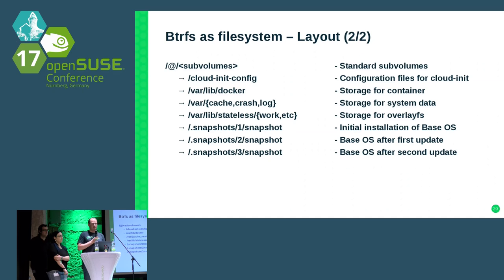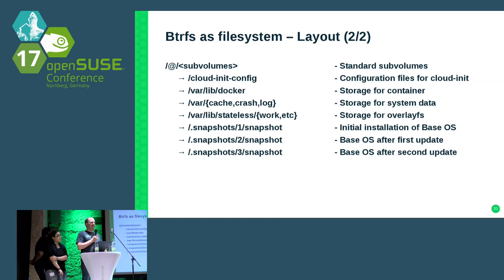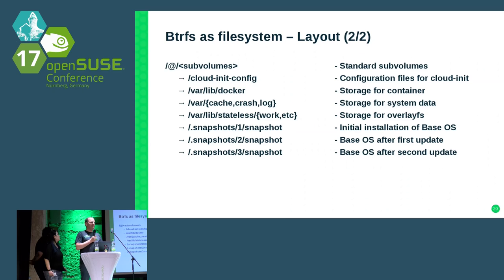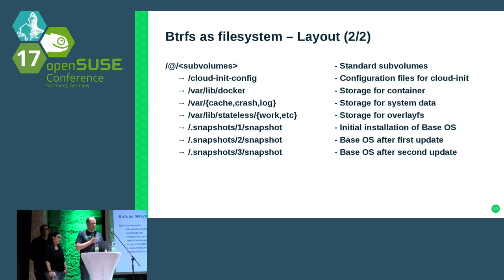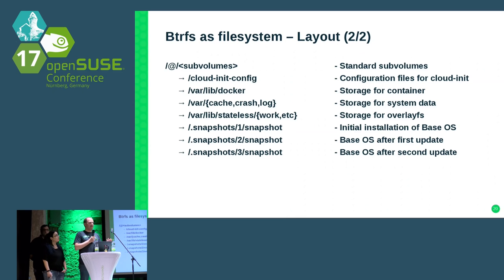We have quite a few subvolumes — even more than SLES 12 had. The main problem we faced was /var/lib. On one side, many applications need /var/lib as read-write. On the other side, information like the RPM database is stored there and needs to be part of the root filesystem. We couldn't exclude the whole /var/lib subdirectory. This is future work — we may consider moving the RPM database to /usr, but not today.